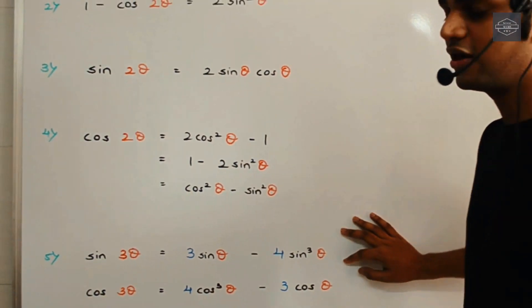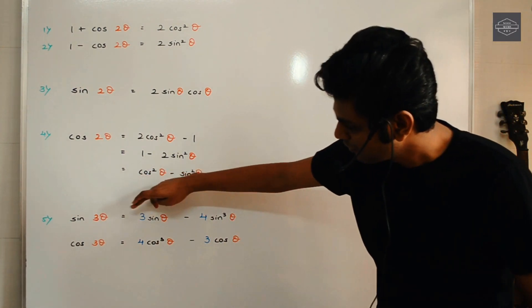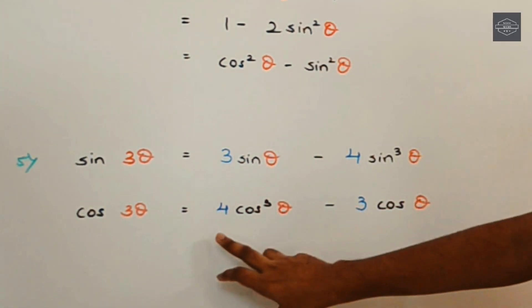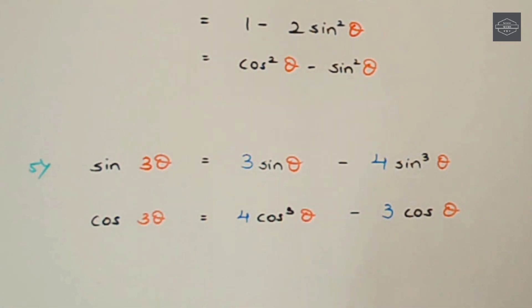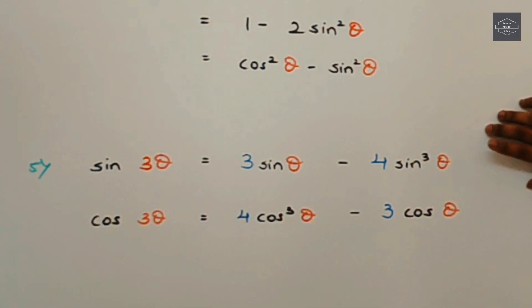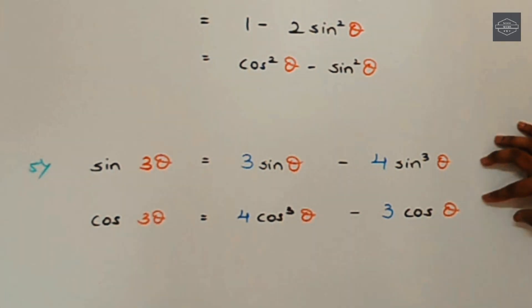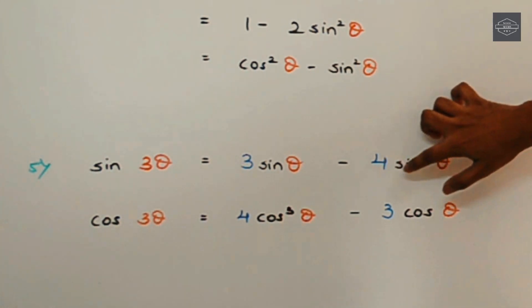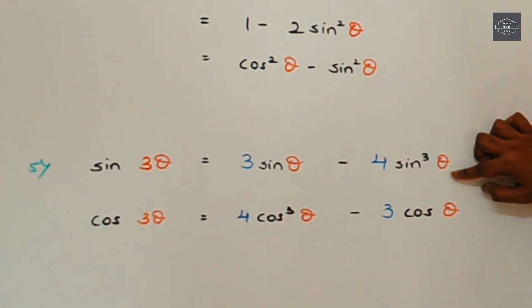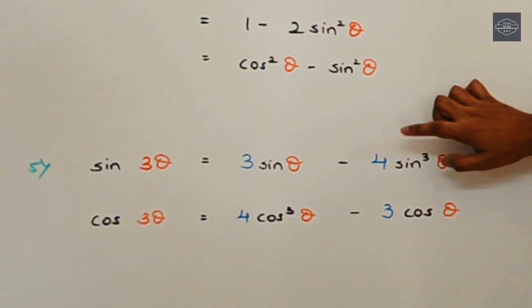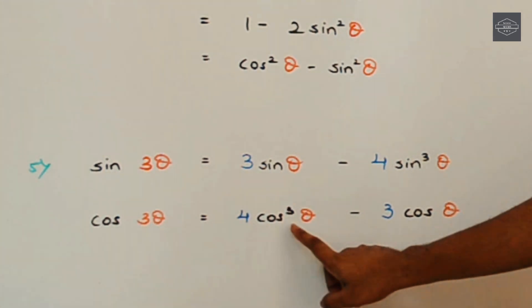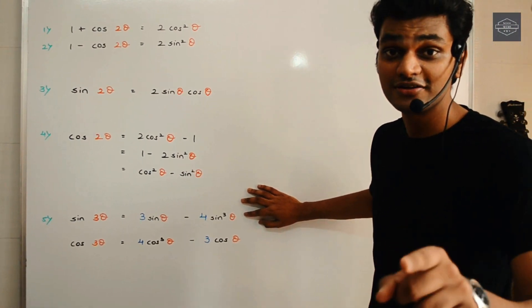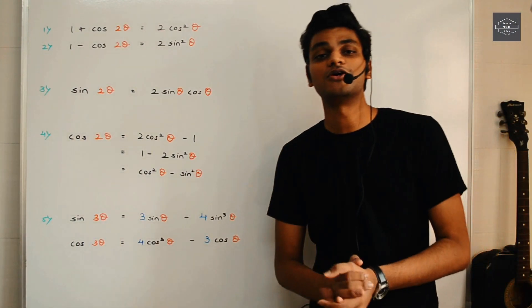Then we have the triple angle formulas. Just focus on the numbers in blue: sin 3θ ke liye we have 3 and 4, and cos 3θ ke liye we have 4 and 3. So we say: sin 3θ, 3-4 — sin 3θ, 3-4 — cos 3θ, 4-3 — cos 3θ, 4-3. And the higher number always goes with the cube term — agar sine hoga to sine cube θ, agar cos hai to cos cube θ.